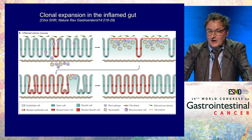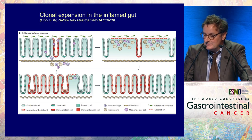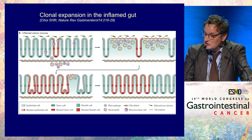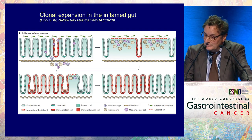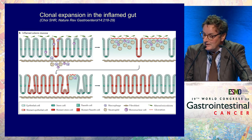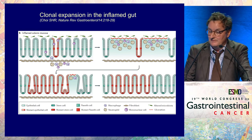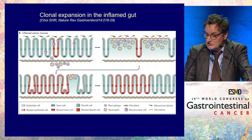The theory of field cancerization in the inflamed gut starts with stem cells located within the depth of the crypt. When mutated, they have a survival advantage during inflammation over non-mutated stem cells. When inflammation resolves, there is more rapid repopulation with mutated stem cells than non-mutated ones. This explains at least in part the phenomenon of clonal expansion and field cancerization, which seems unique to this colorectal cancer pathway.